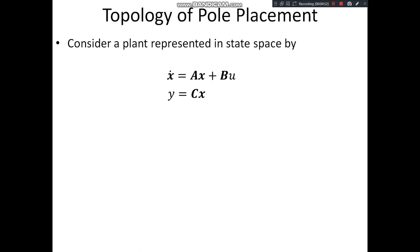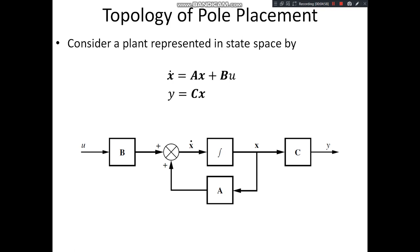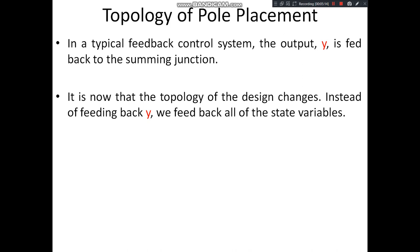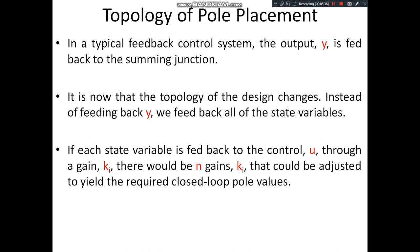Consider a plant represented in state-space as X-dot = AX + BU and Y = CX. In a typical feedback control system, the output Y is fed back to the summing junction, where it is compared with the reference input. Now the topology of design changes — instead of feeding back Y, we feed back all the state variables. So we are not going to feed back the output Y, but we are going to feed back all the state variables.